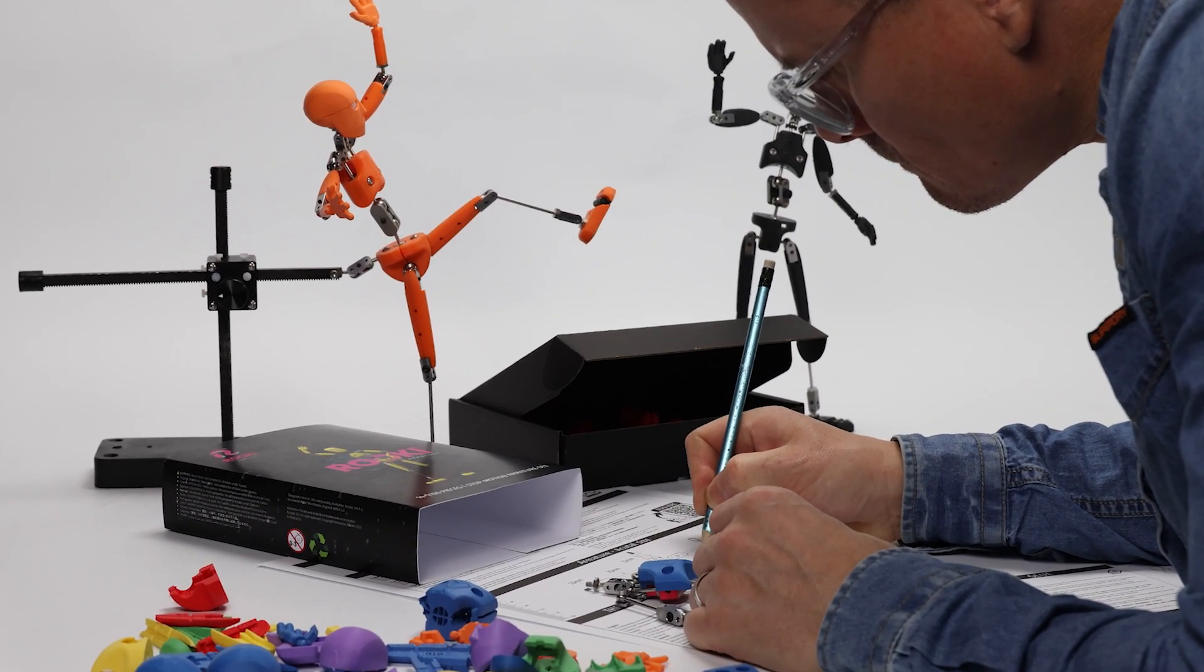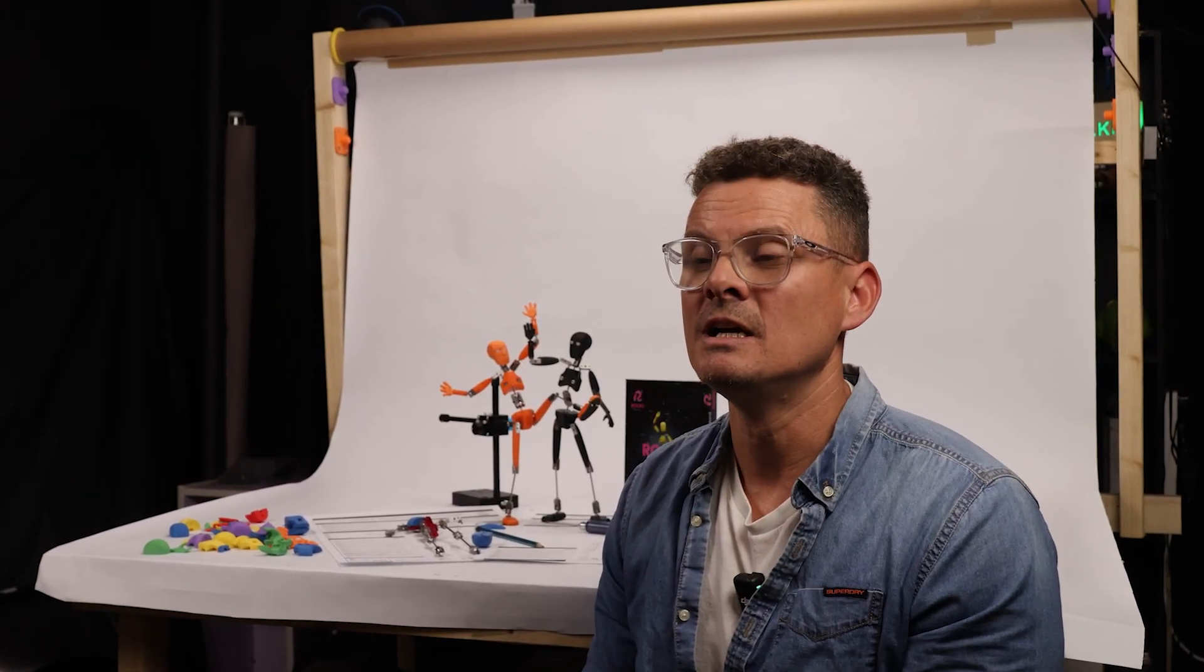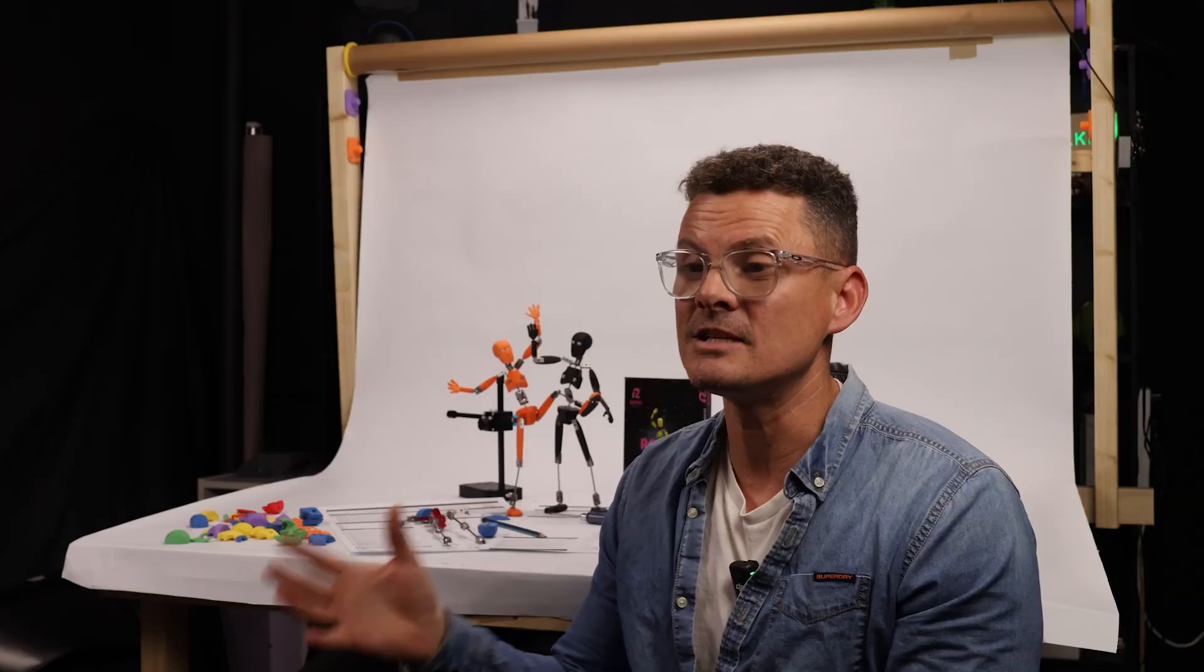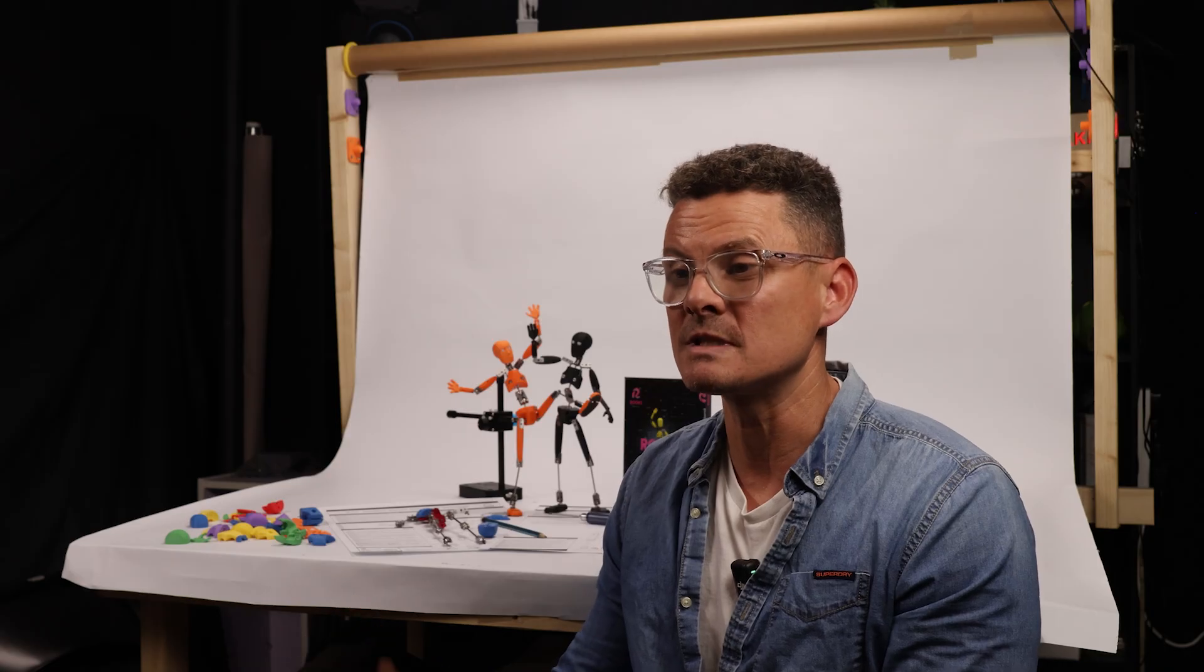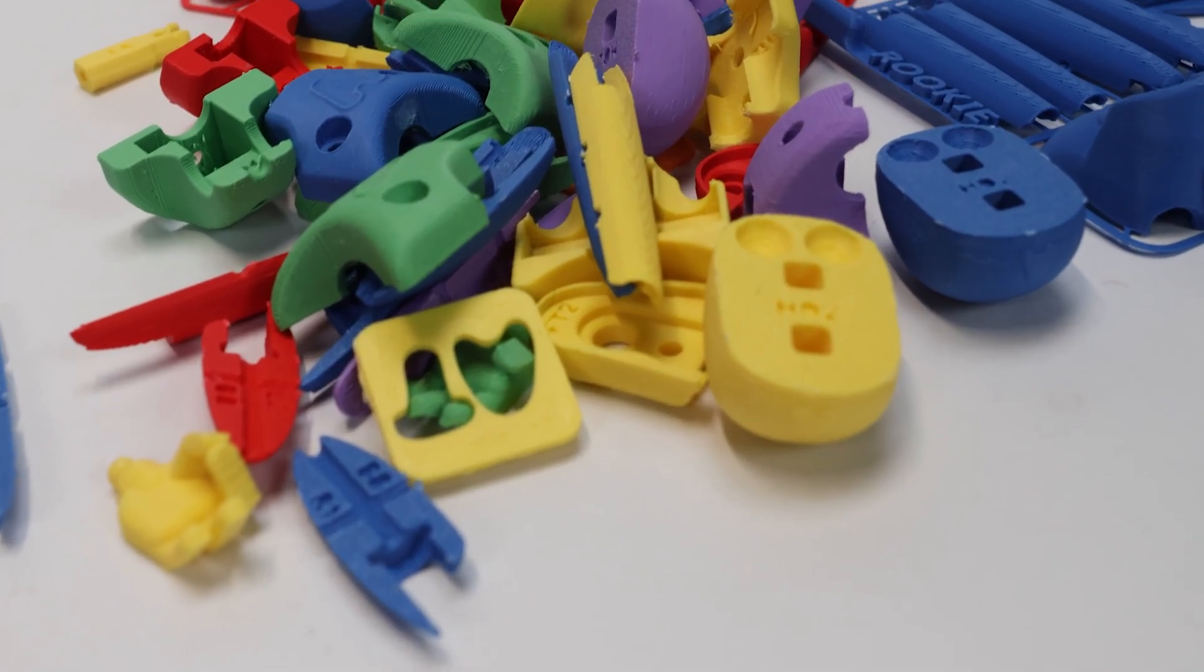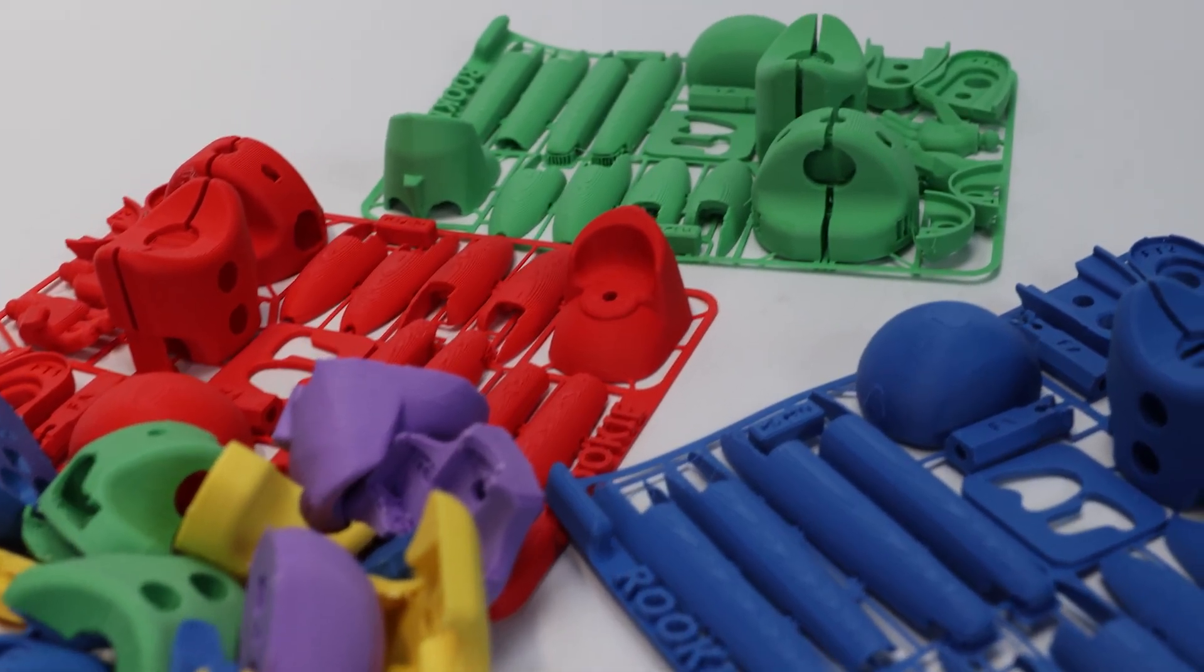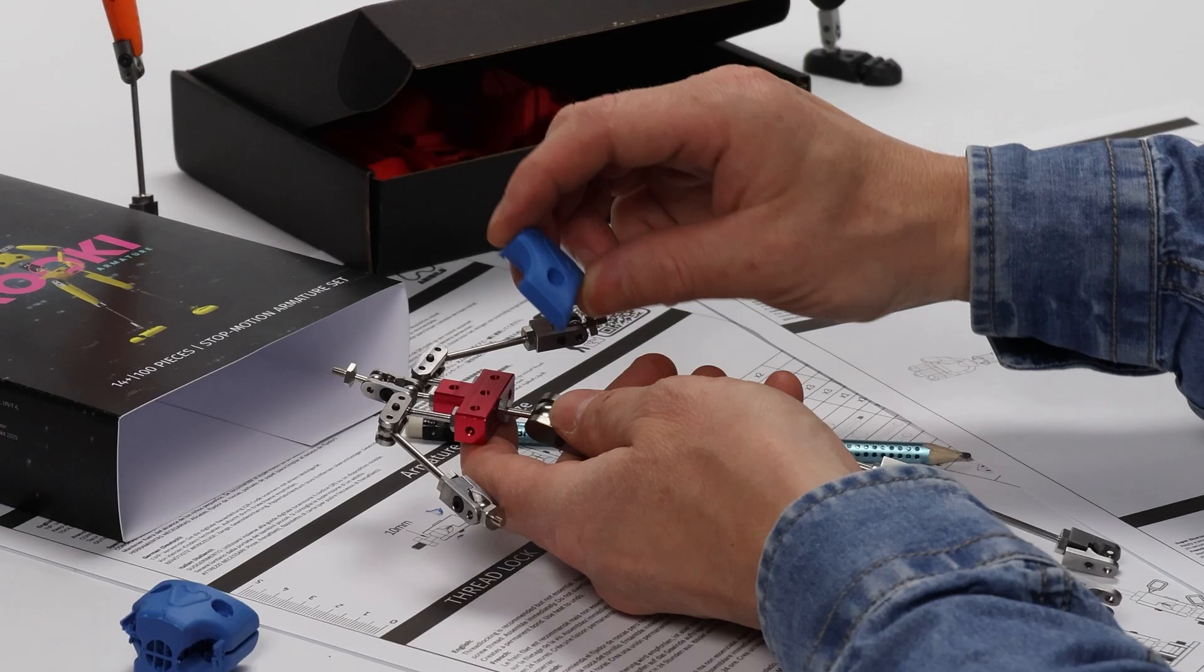We've crafted digital asset packs to help anyone learn stop motion character animation. With Rookie, you can learn on set as the digital onion skins literally walk you through every frame-by-frame movement. As well as receiving the Rookie body parts in your kit, you'll also get access to STL printable files including hand gesture sets, body packs, and lip sync sets. You can download, customize, and 3D print them at home, in college, or in your own studio.